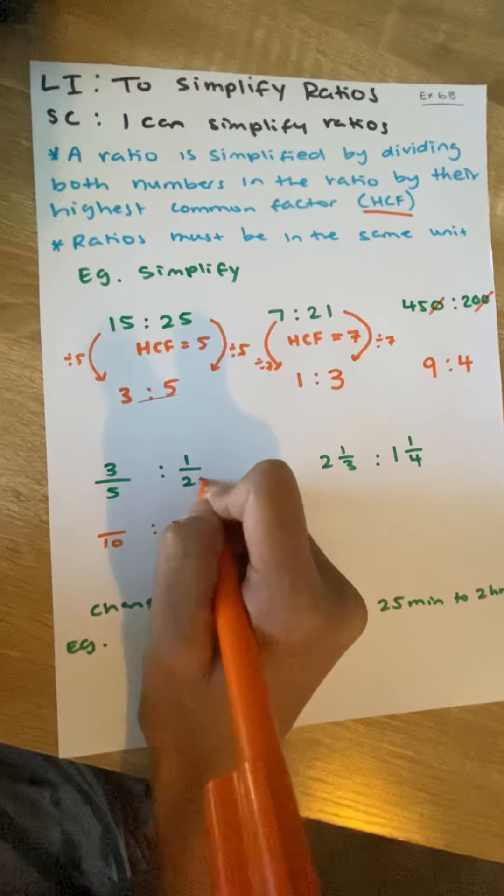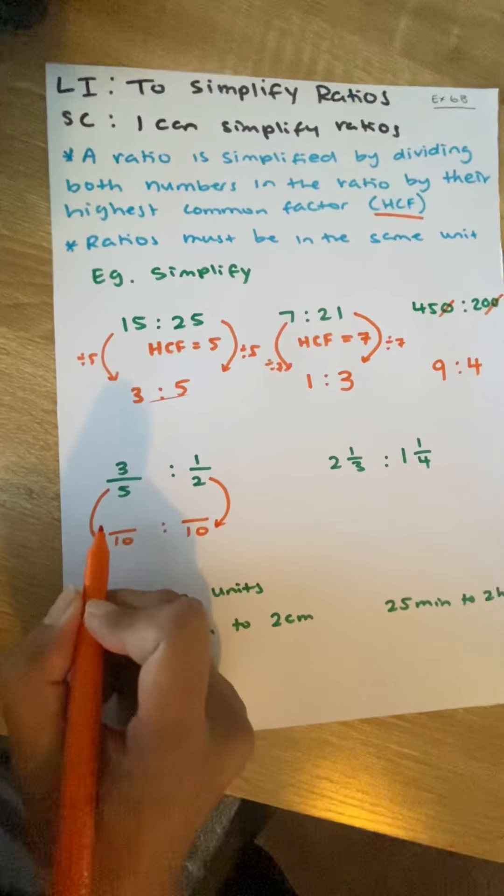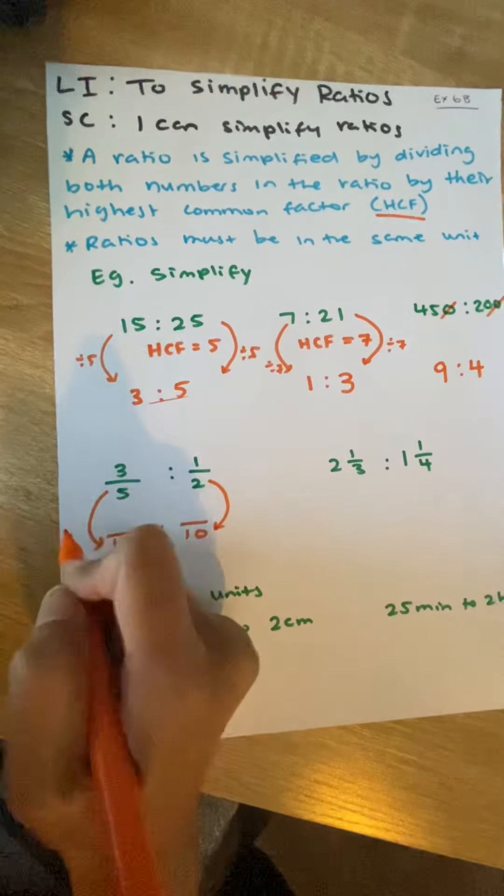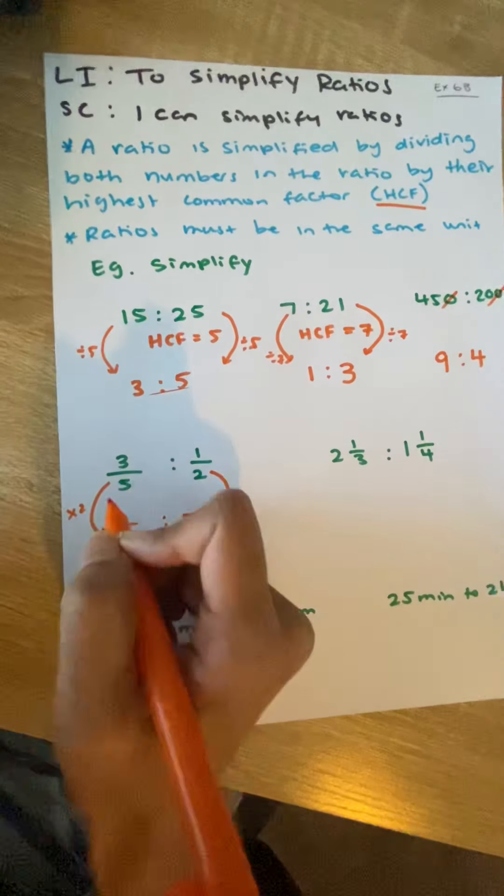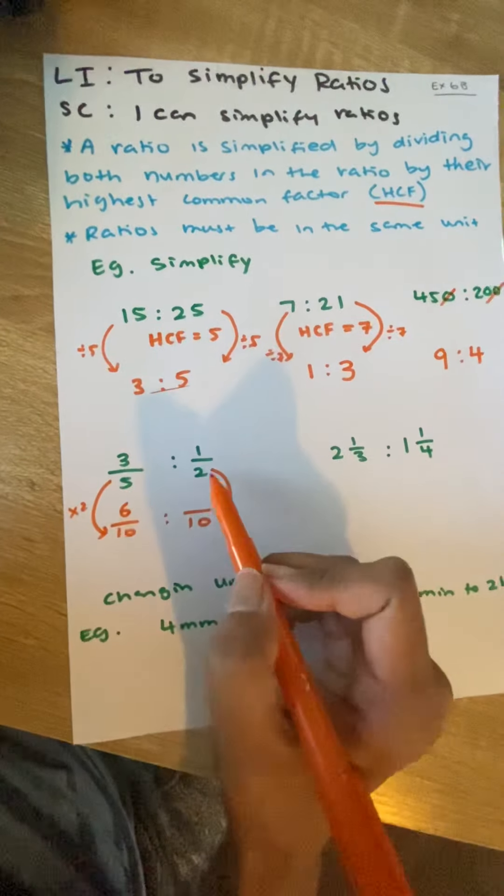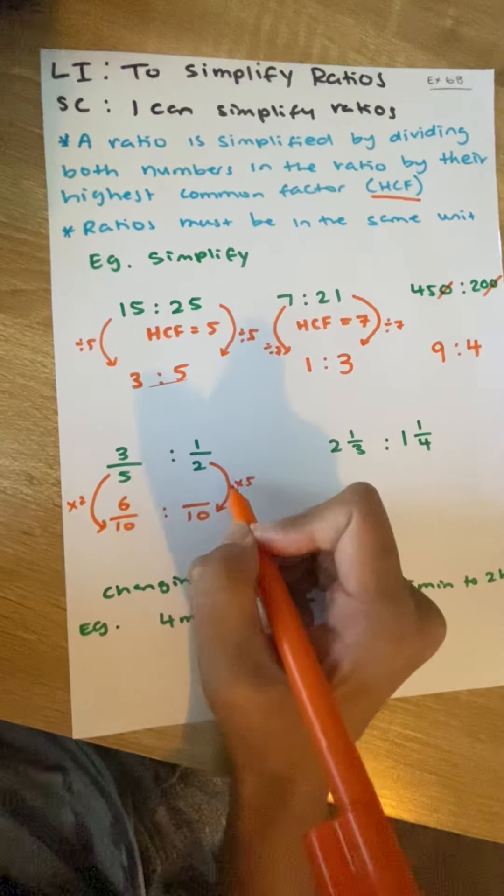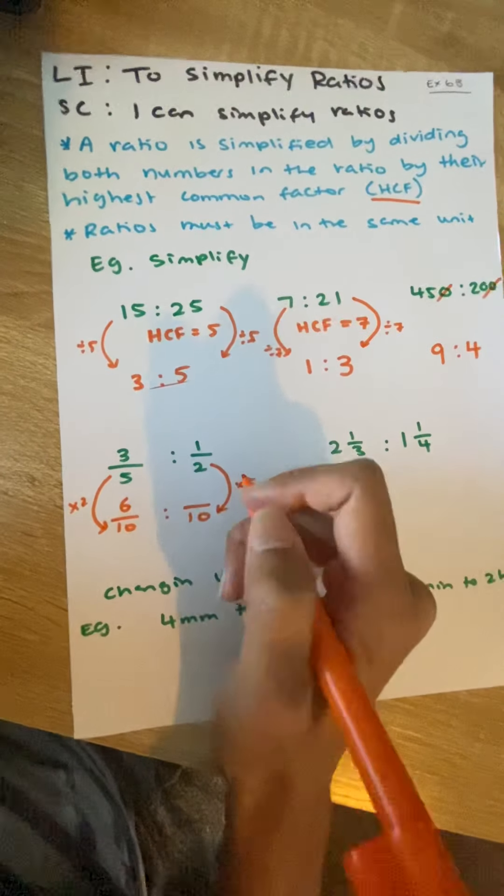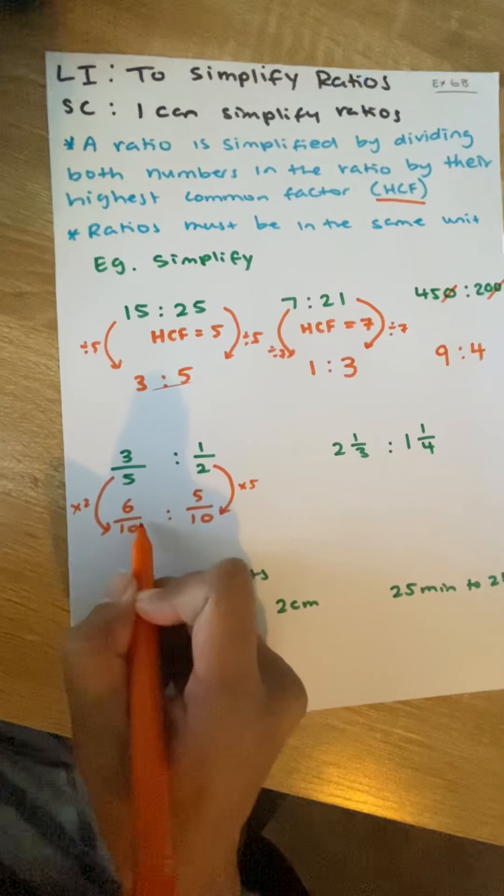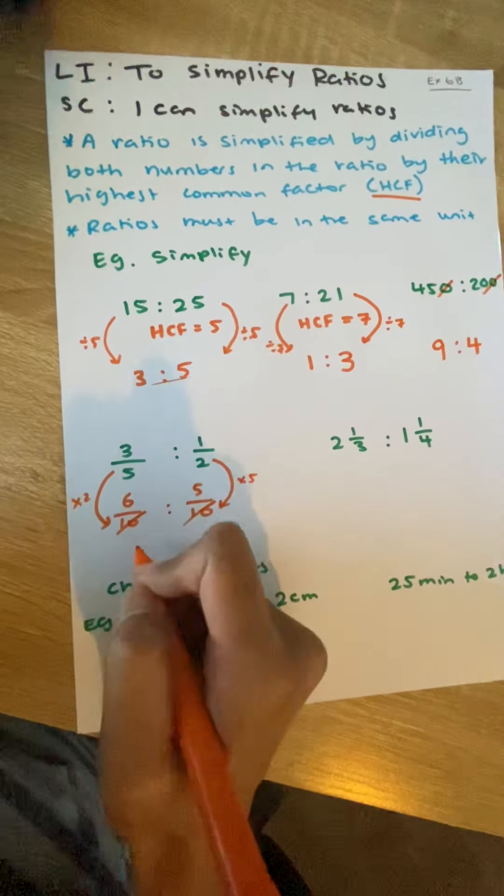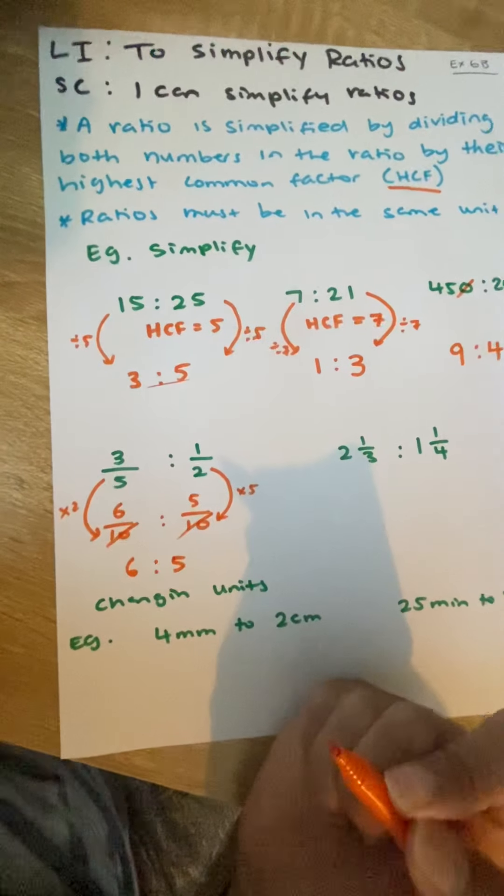How many times does 2 go into 10? How many times does 5 go into 10? 5 goes into 10 twice. So, we're going to now times our top number by 2 as well. So, 3 times 2 is 6. 2 goes into 10 five times. So, what we do to the bottom, we're going to do the top. 1 times 5 is also 5. Now, we notice how both of these denominators are the same. We can cancel those and I can now say that my ratio is 6 to 5.